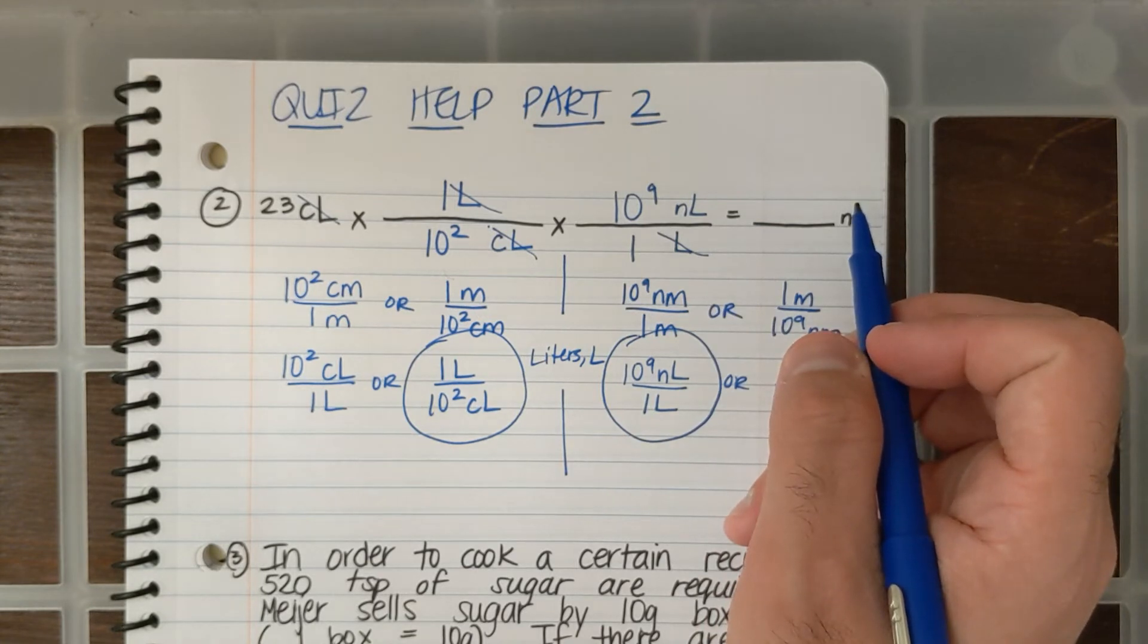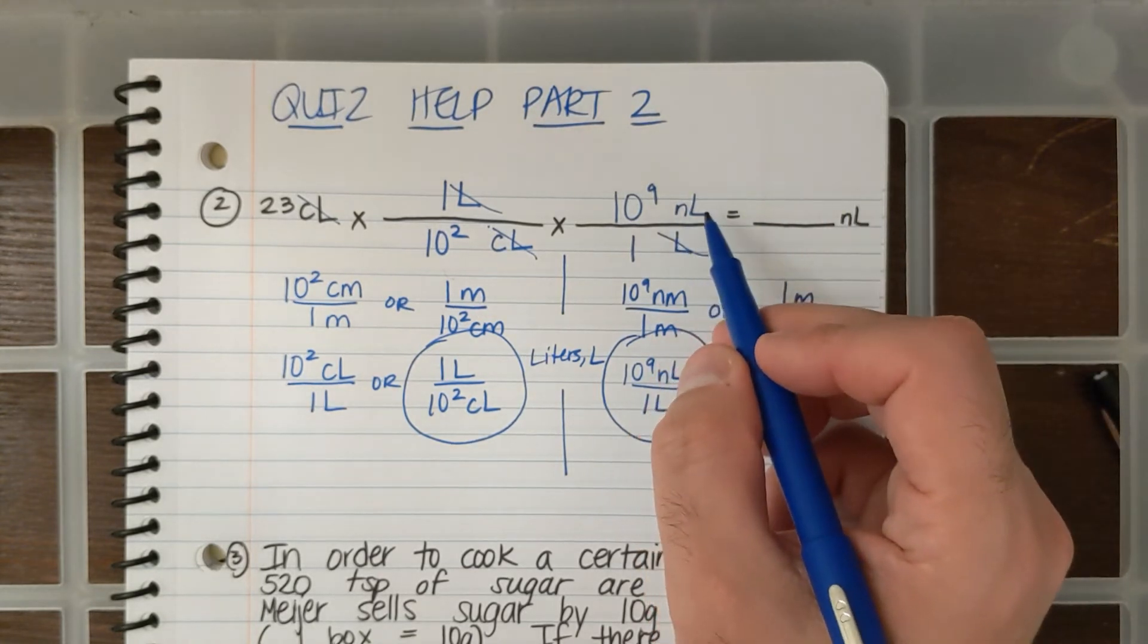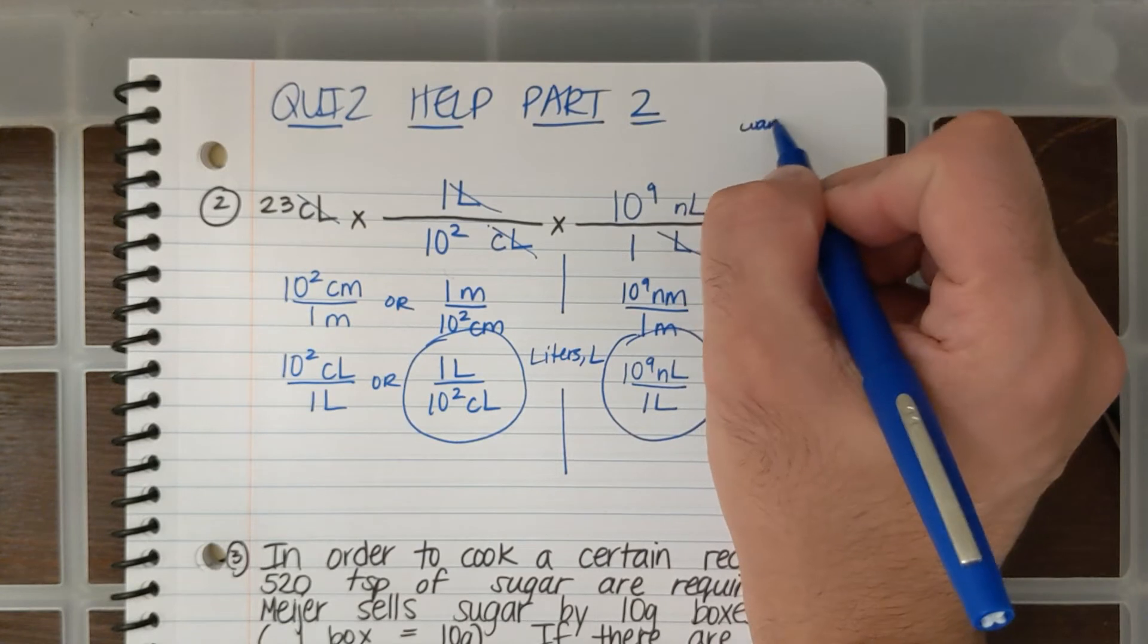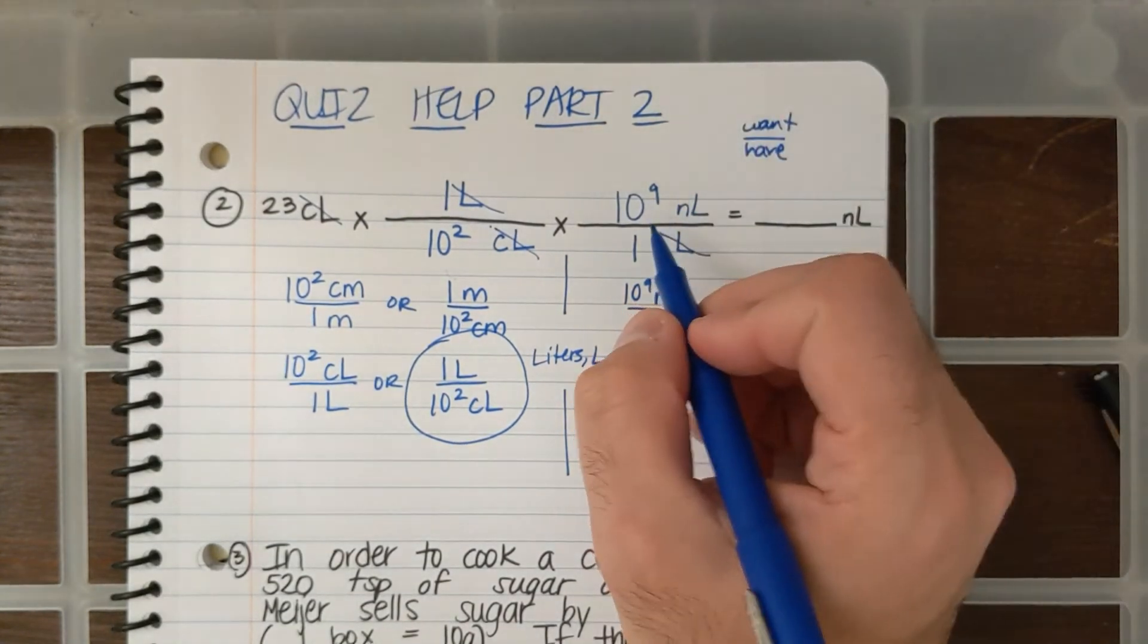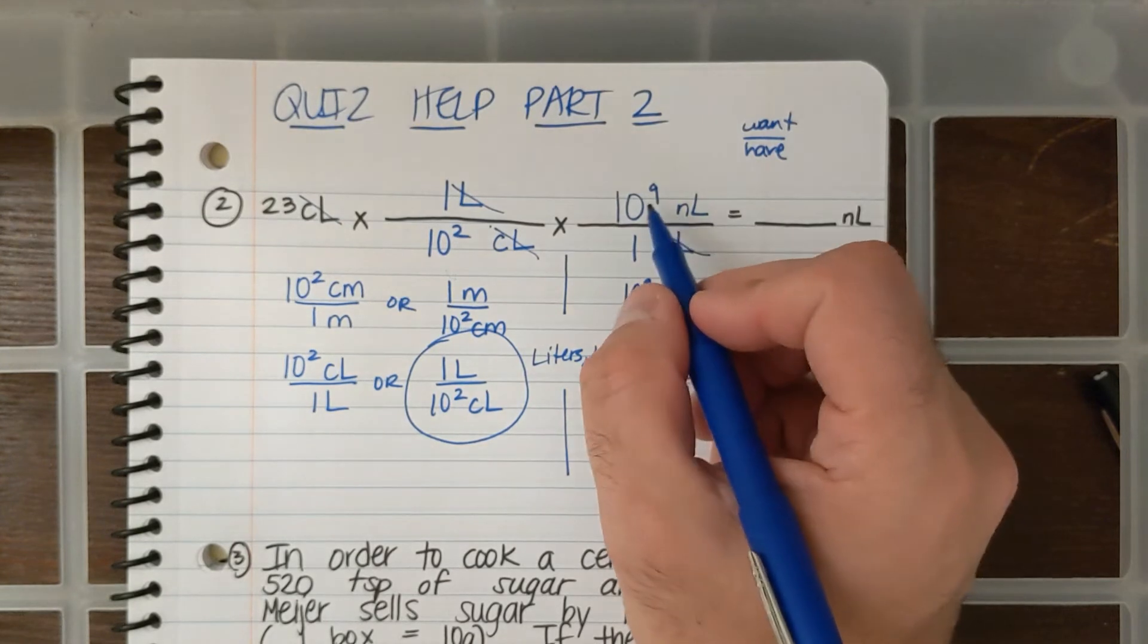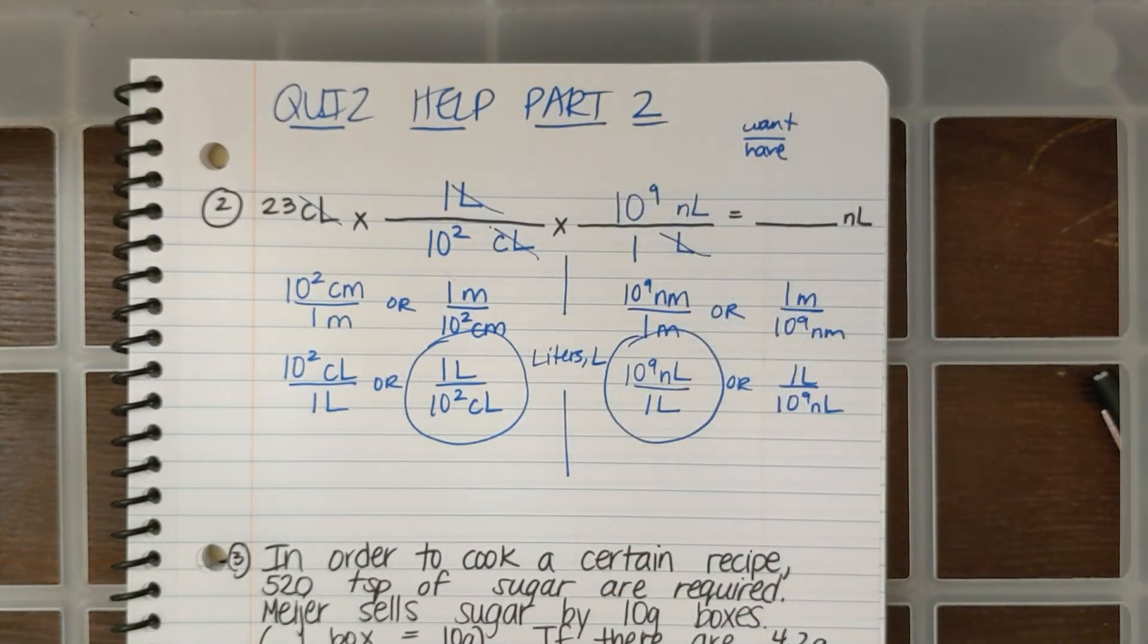And I want nanoliters. That means I have to put nanoliters on top. Remember, it's want over have. So, the only fraction that had nanoliters on top and liters on the bottom is 10 to the ninth nanoliters over 1 L.